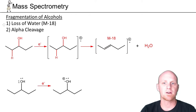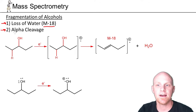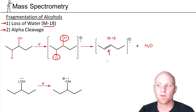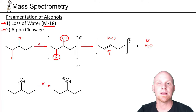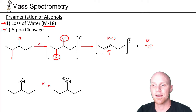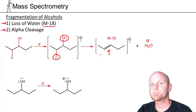Now we'll take a quick look at the fragmentation pattern for alcohols. Very common with alcohols is the loss of water, leading to what's called the M-18 peak, and also alpha cleavage, similar to what we saw in alkyl halides. For the loss of water: once we form the molecular ion, it readily undergoes loss of H and OH to form an alkene, and in losing water we lose 18 from the mass — the M-18 peak. This is so common that alcohols often don't even have a molecular ion peak, and your largest peak might be the M-18 instead.